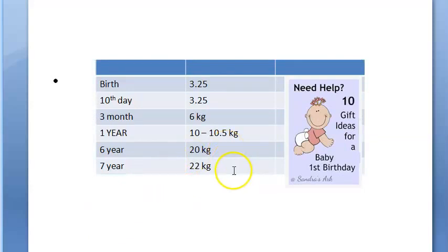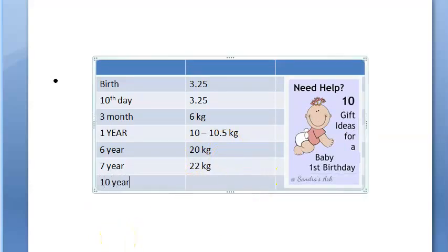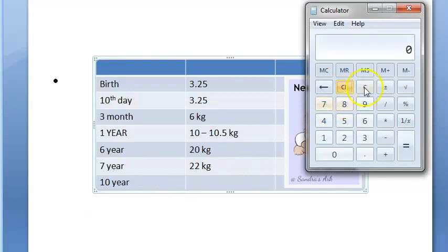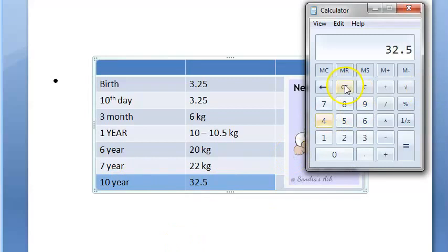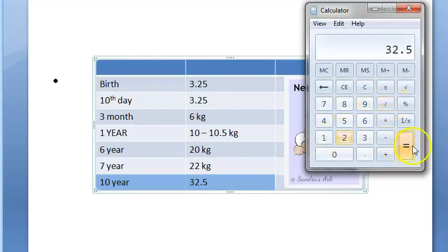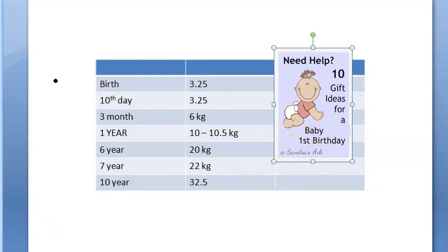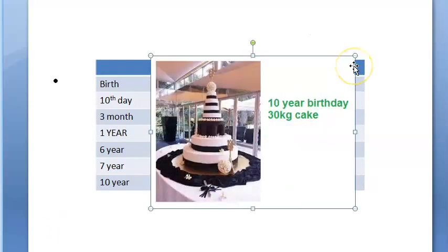Now let us calculate for the 10th year birthday using the same formula: (10 × 7 − 5) / 2 = (70 − 5) / 2 = 65 / 2 = 32.5 kgs. So at the 10th year birthday, the weight should be approximately 32 kgs. Remember: first year birthday — 10 kgs; 10th year birthday — 32 kgs.